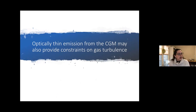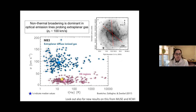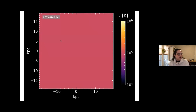We might also be able to look at optically thin emission from the circumgalactic medium to tell us something about turbulence. This is from a nice paper by Erin Betcher, who hopefully will tell us more when she's on the panel Thursday. It shows that non-thermal broadening is very critical in interpreting optical emission lines in extraplanar gas. I'm hopeful we'll see more of these kinds of observations from MUSE and KCWI results in the future. That's a fast observational perspective, and now I'll turn it over to Drummond with a simulation.